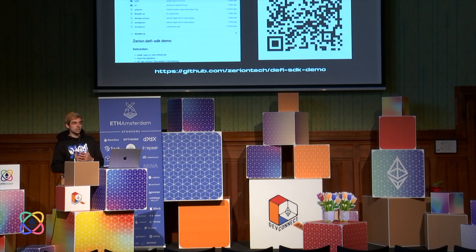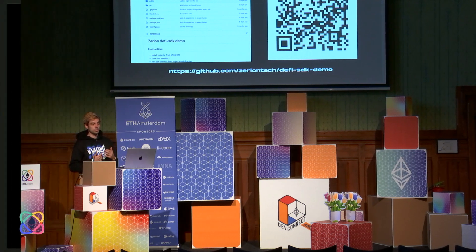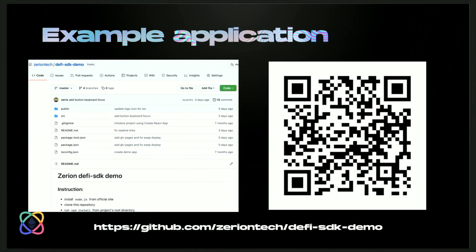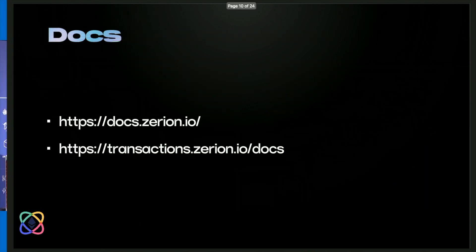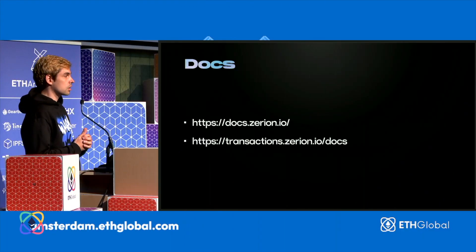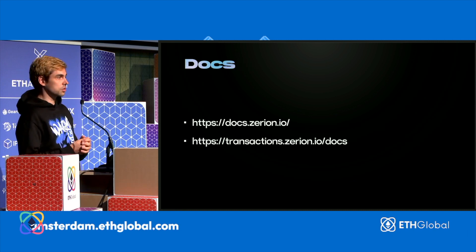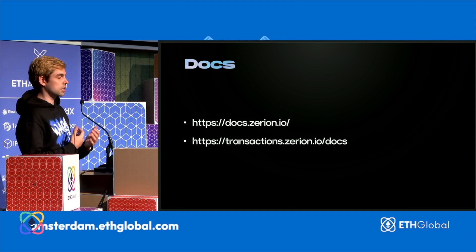You can access the demo application by scanning the QR code or following the link. You can download it and we'll discuss what's in it shortly. Documentation for our API is available at docs.zerian.io, and for the Transaction Builder at transactions.zerian.io/docs.